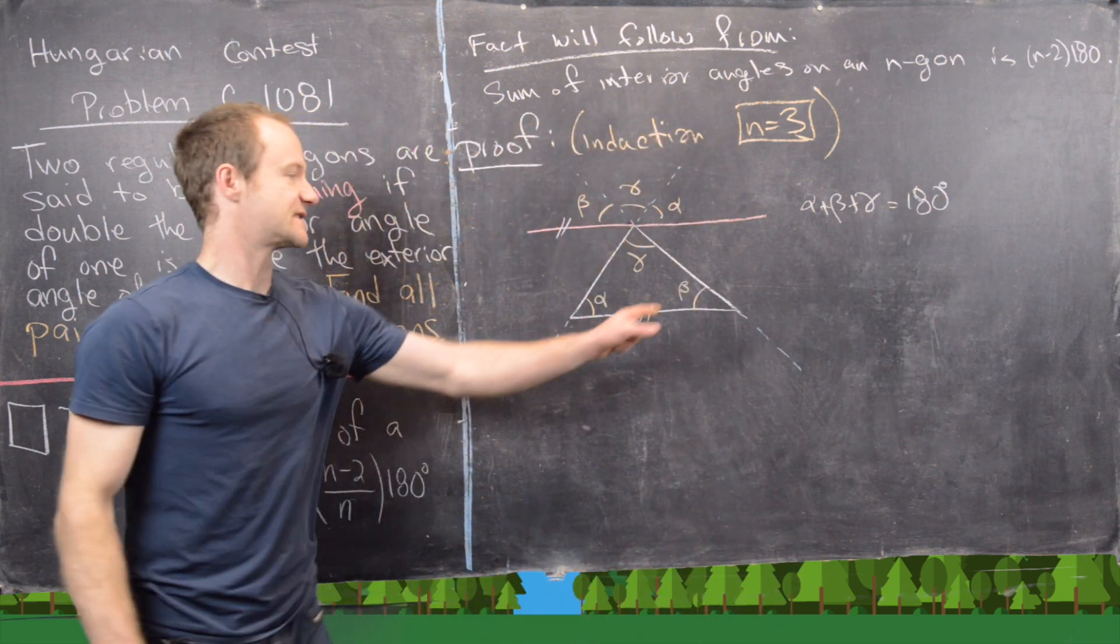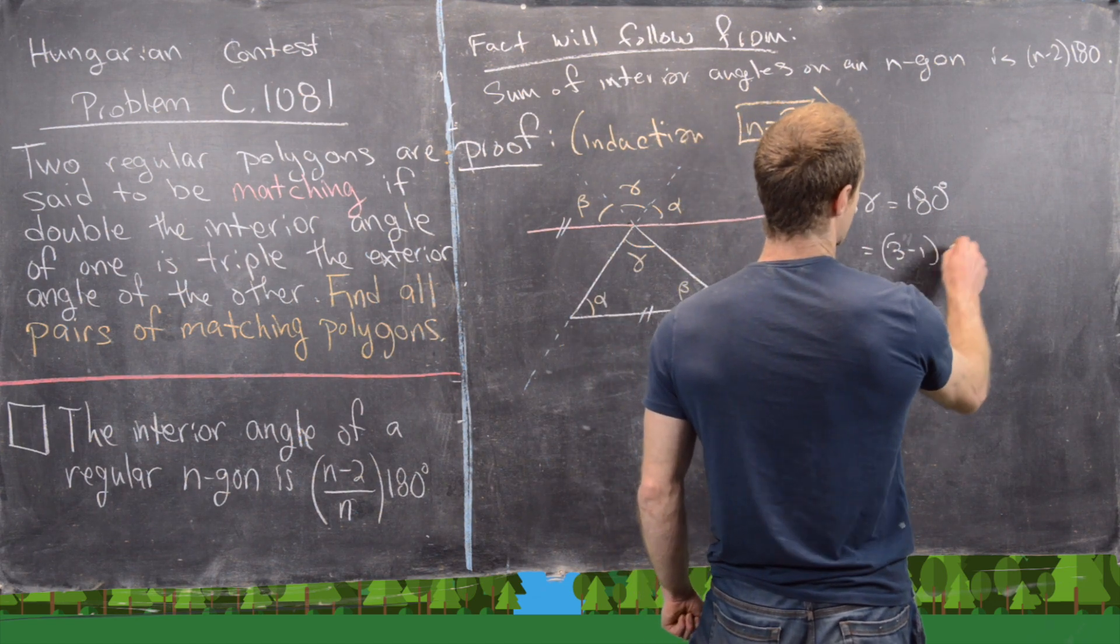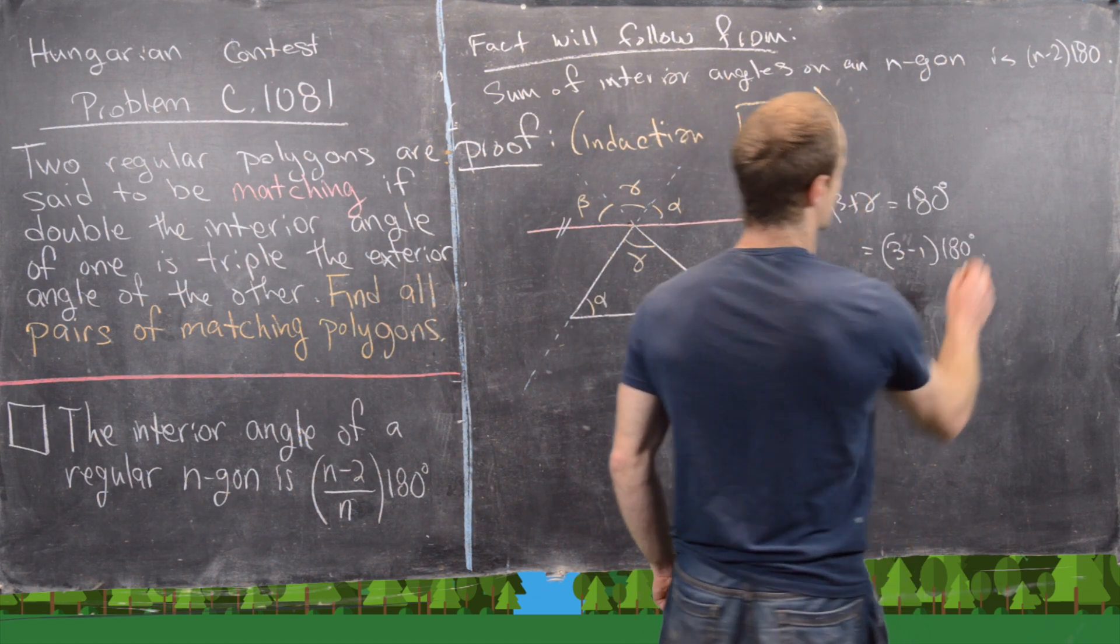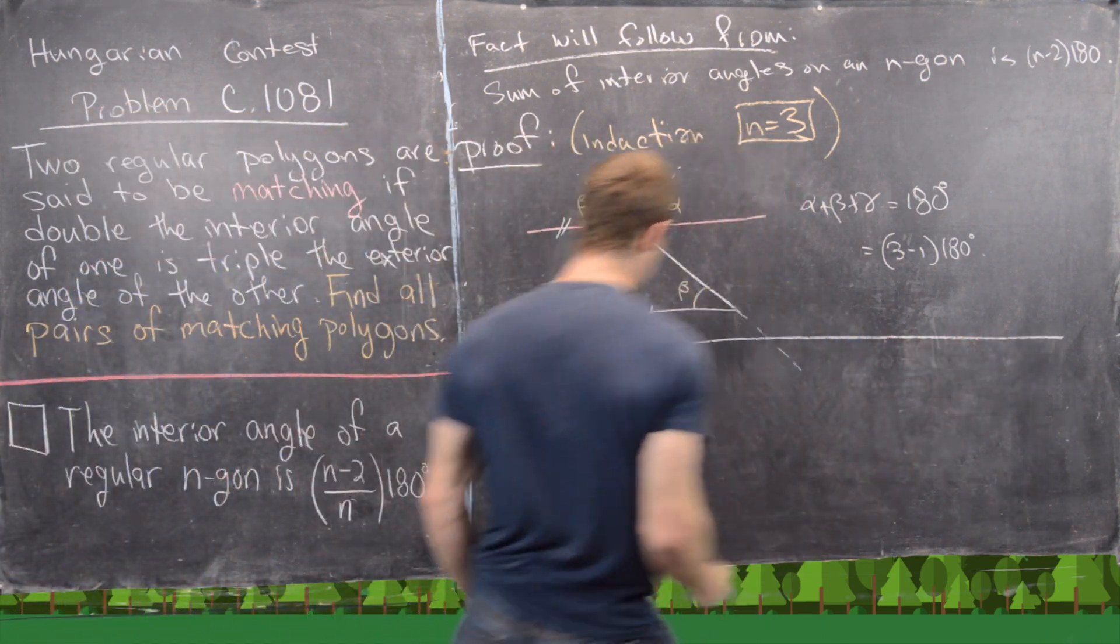But since this creates a straight line, we know that alpha plus beta plus gamma equals 180. But that's the sum of the angles of this triangle, which is exactly equal to 3 minus 1 times 180, which is exactly what we needed.